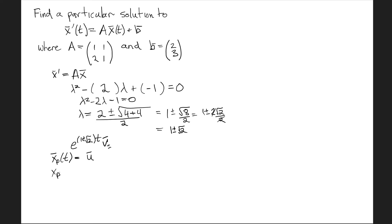Now I take the derivative of that, and because u is a constant vector its derivative is 0, and I set that equal to the right hand side which is Au + B. So I'm solving the equation (1,1; 2,1) times (u₁,u₂) + (2,3) = 0.